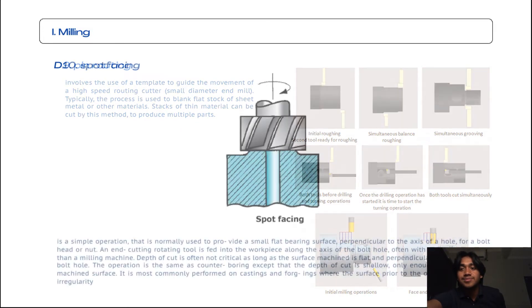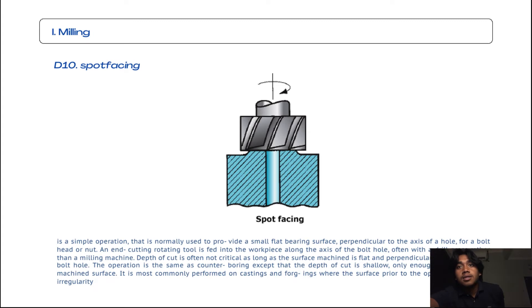The tenth subtopic from milling is spot facing. Spot facing is a simple operation that normally is used to provide a small flat bearing surface perpendicular to the axis of a hole for a bolt head or nut. An end cutting rotating tool is fed into the workpiece along the axis of the bolt hole, often with a drill press rather than a milling machine. The depth of cut is often not critical as long as the surface machined is flat and perpendicular to the axis of the bolt hole. The operation is the same as counterboring except that the depth of cut is shallow, only enough to create a flat machine surface.